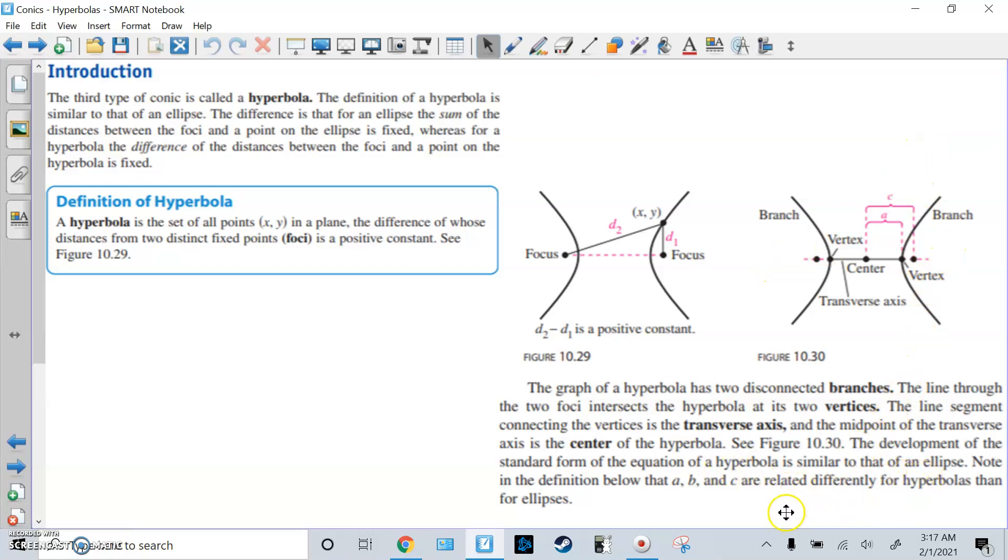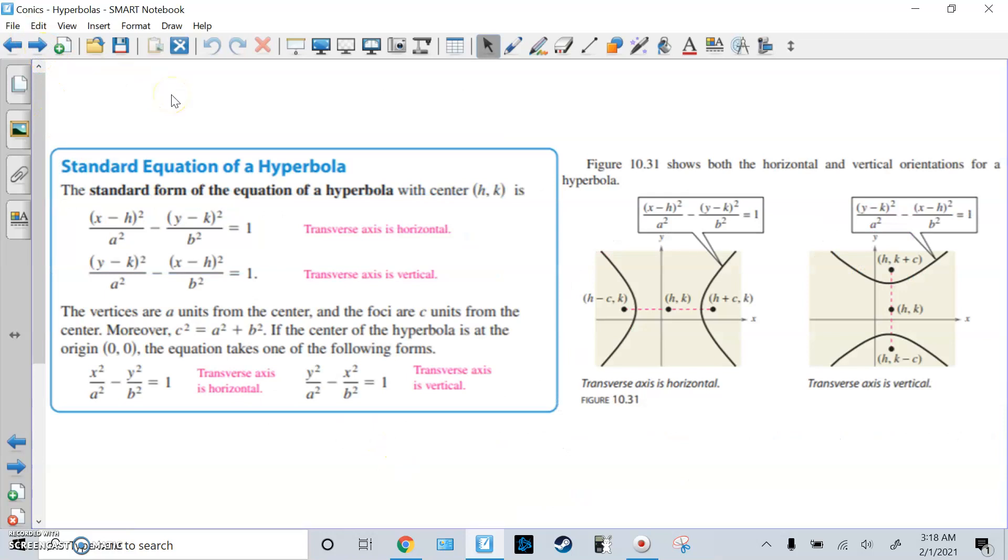All right, and we're going to get an equation for a hyperbola. So here's the standard equation. Notice it looks exactly the same, but the only difference is it's the minus sign instead of the plus sign. The standard form of equation for a hyperbola with center (h,k) is this if it's horizontal and this if it's vertical. So how do you know if it's horizontal or vertical? You check which one's positive first. Here x is first, so this is going to be horizontal. And here y is first, so this is going to be vertical.